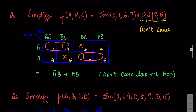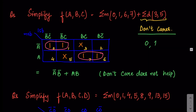Let's move to the next question. We have to simplify a 3-variable function A, B, C, but this time we have don't care conditions. Don't care means the output can be either 0 or 1 — you don't need to care about it, and you use it for your benefit. Whichever terms are in the don't care group are written with crosses, while the min terms are still represented as 1.